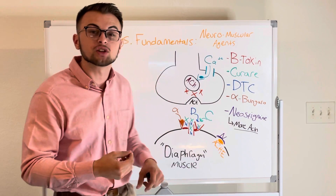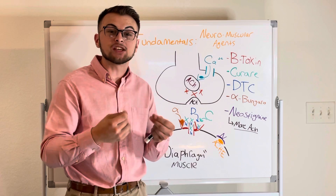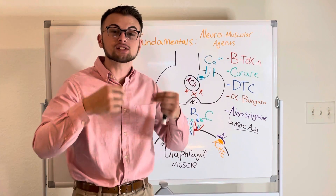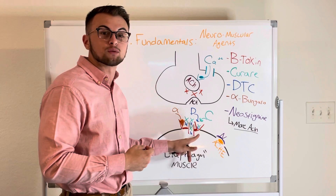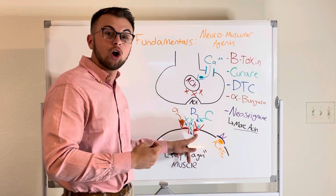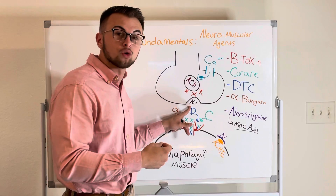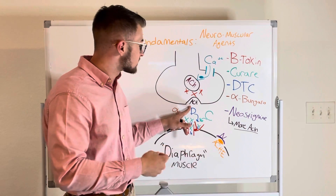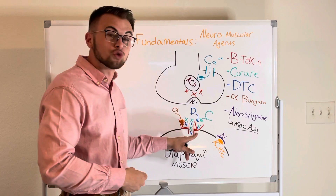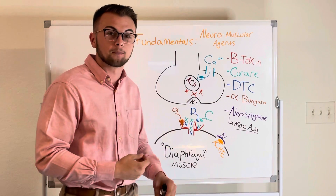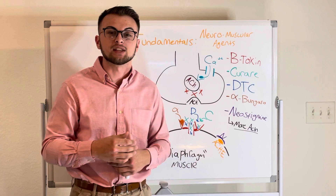In patients with myasthenia gravis, they have a decreased amount of functional acetylcholine receptors. Therefore, we want to increase the amount of acetylcholine available, which will increase the chance that acetylcholine will get to bind to one of their functional receptors.